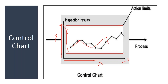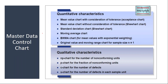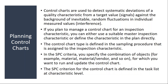How to generate this control chart from the SAP system, we need to understand. These control charts can be generated for quantitative characteristics and also qualitative characteristics. There are a lot of control charts available — I will show you in the configuration. Basically, the control charts are used to detect systematic deviation of a quality characteristic from a target value, against the background of inevitable random fluctuations in individual measured values.